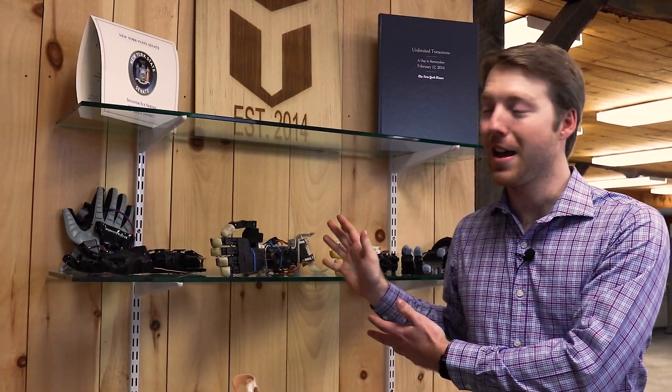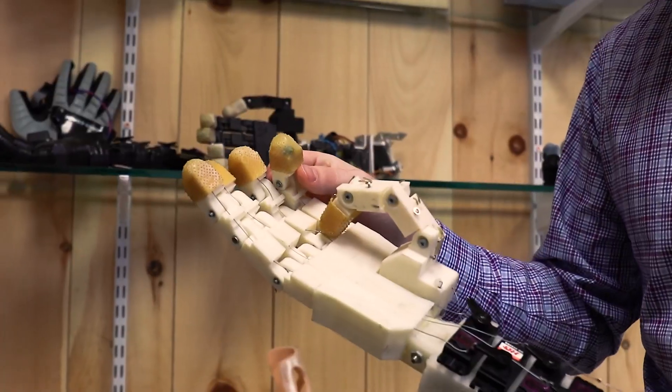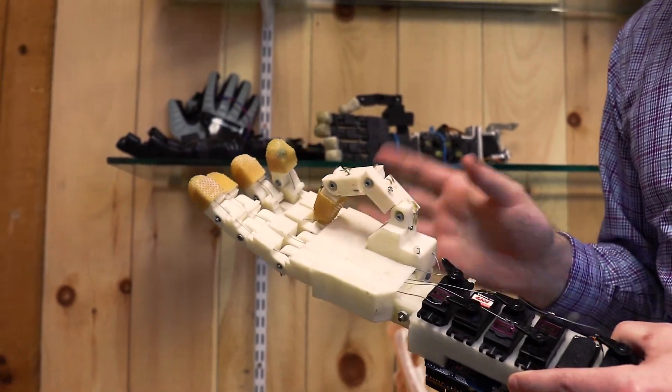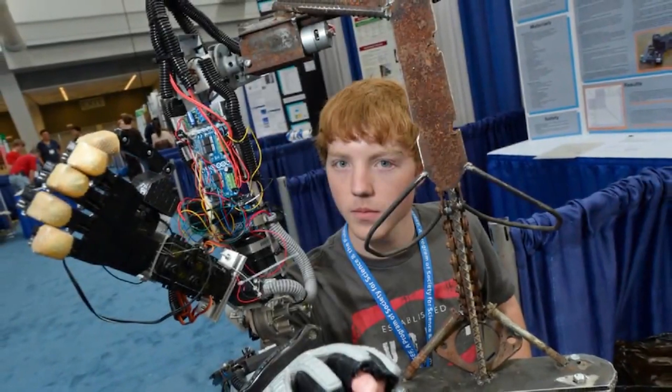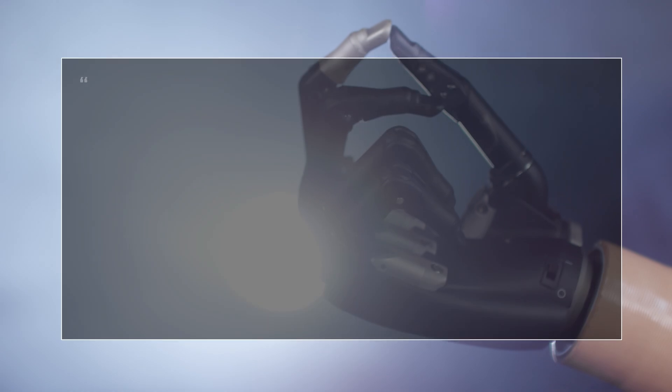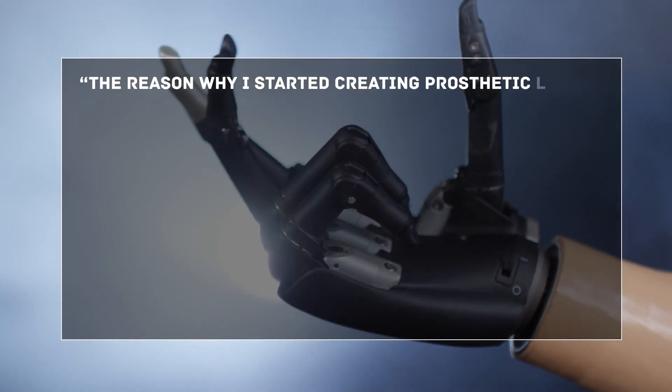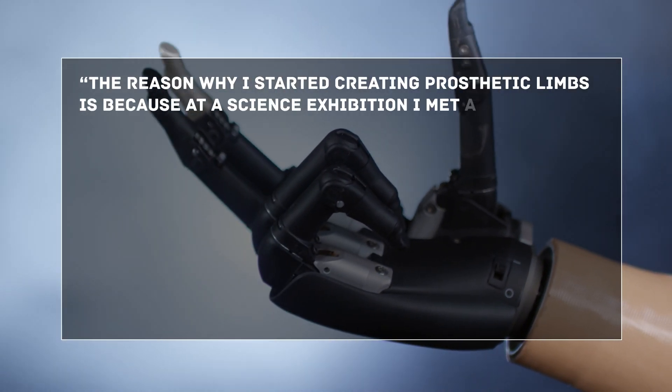The young genius, who was called the next Elon Musk, proposed a qualitatively new way to create bionic prostheses, the development of which he started at the age of 14 in his own bedroom. About the idea of working on this project, Easton himself said: